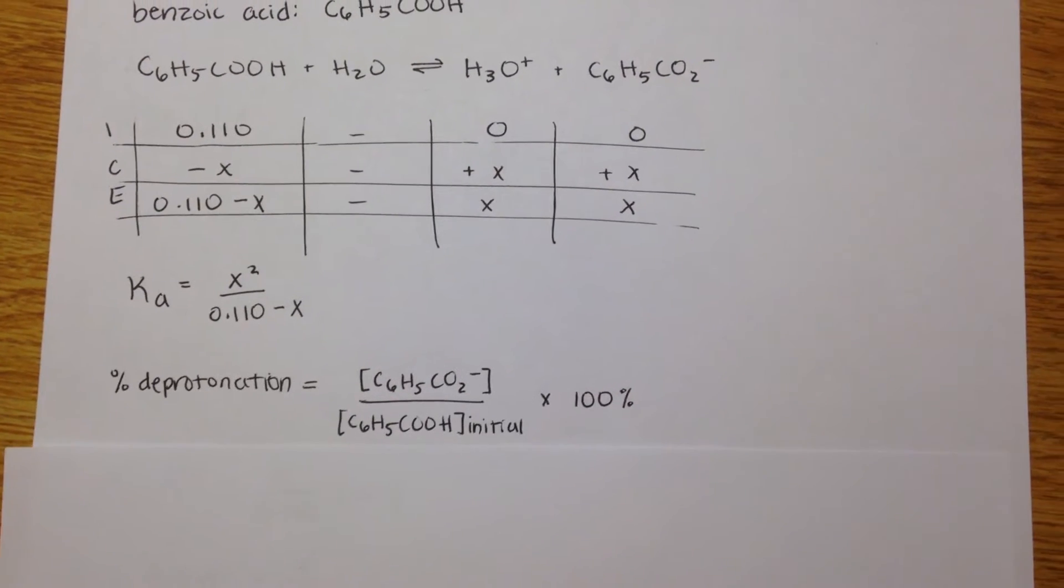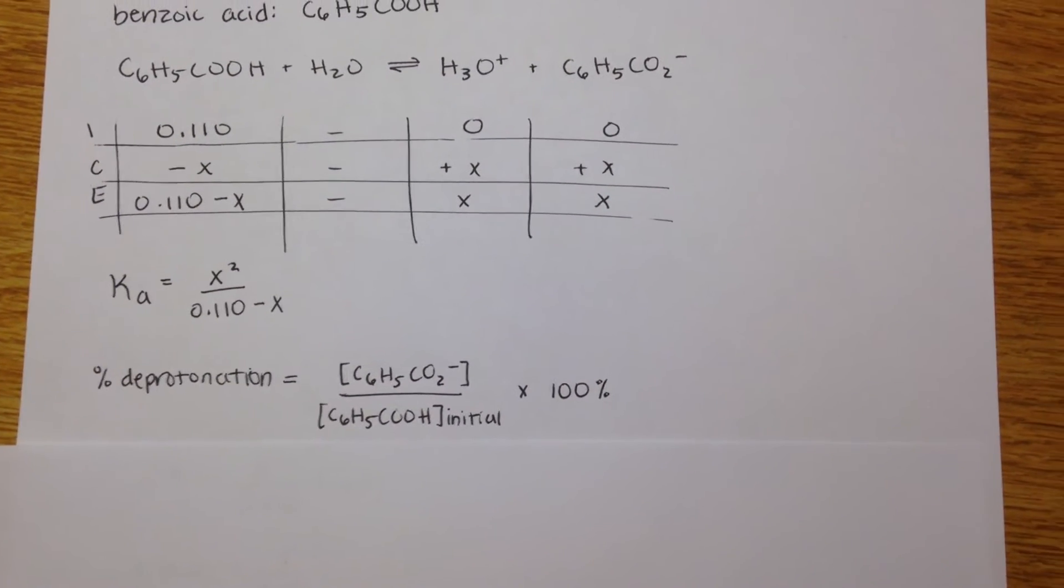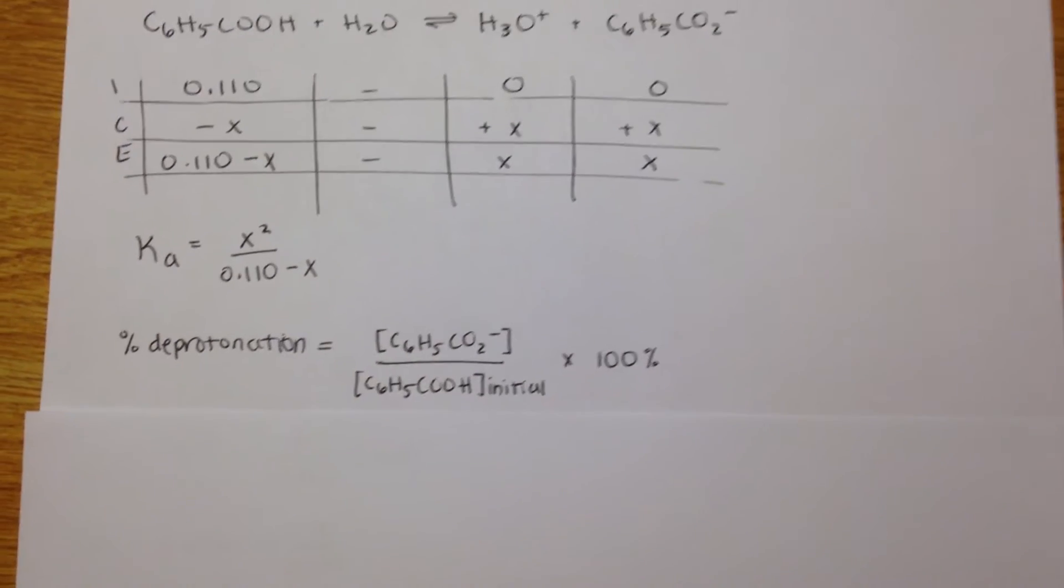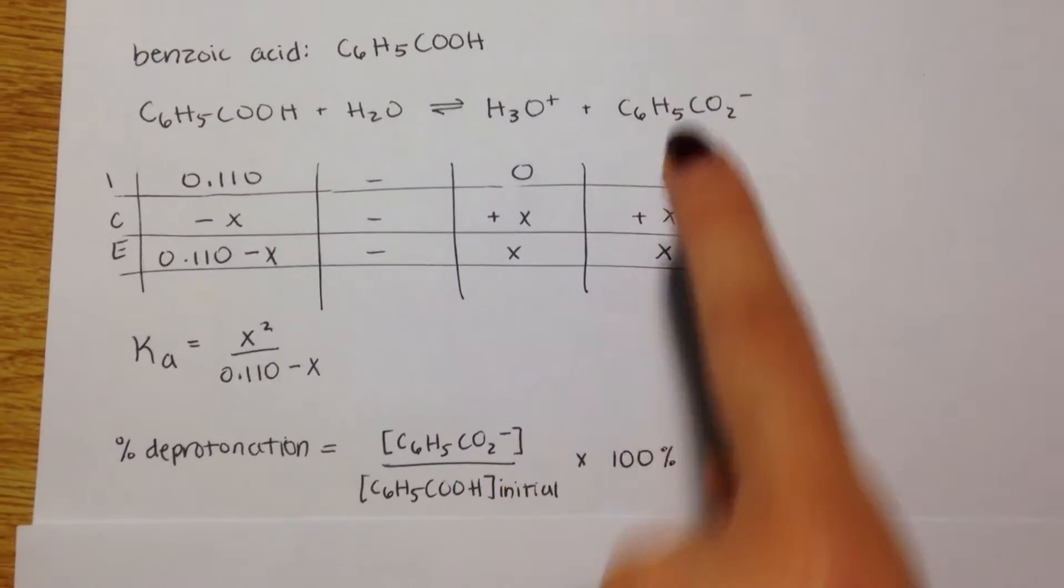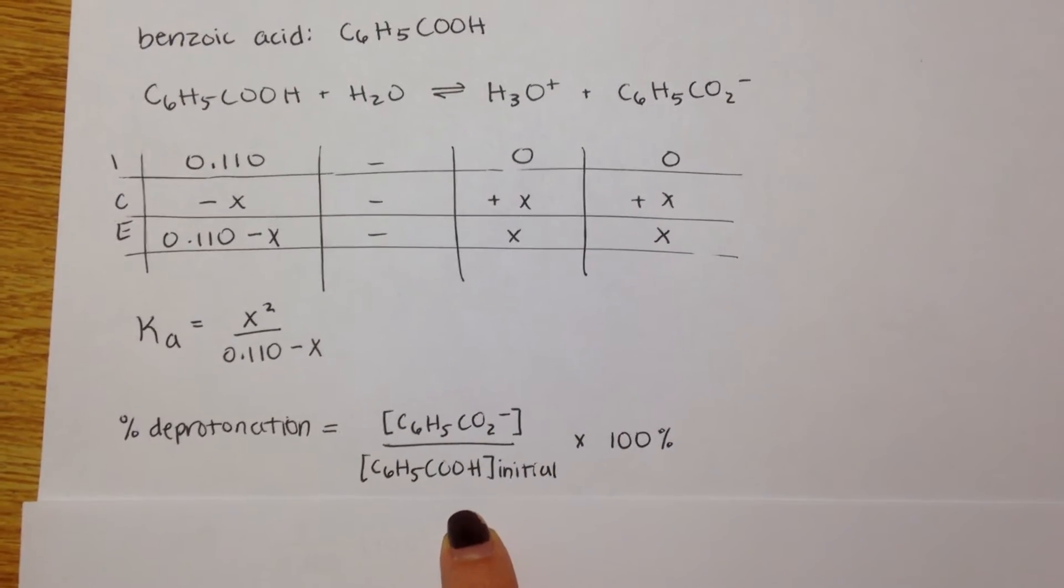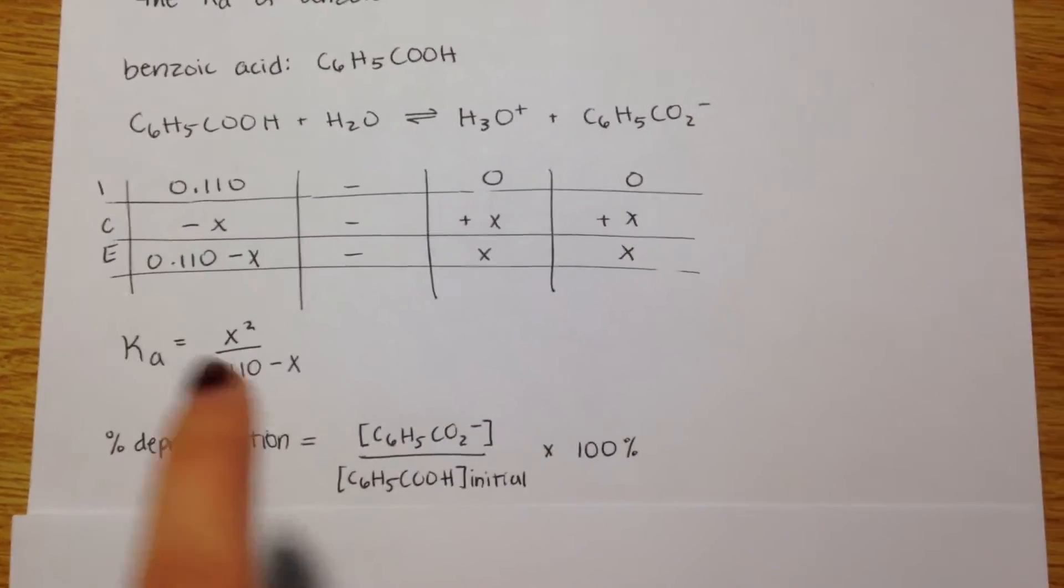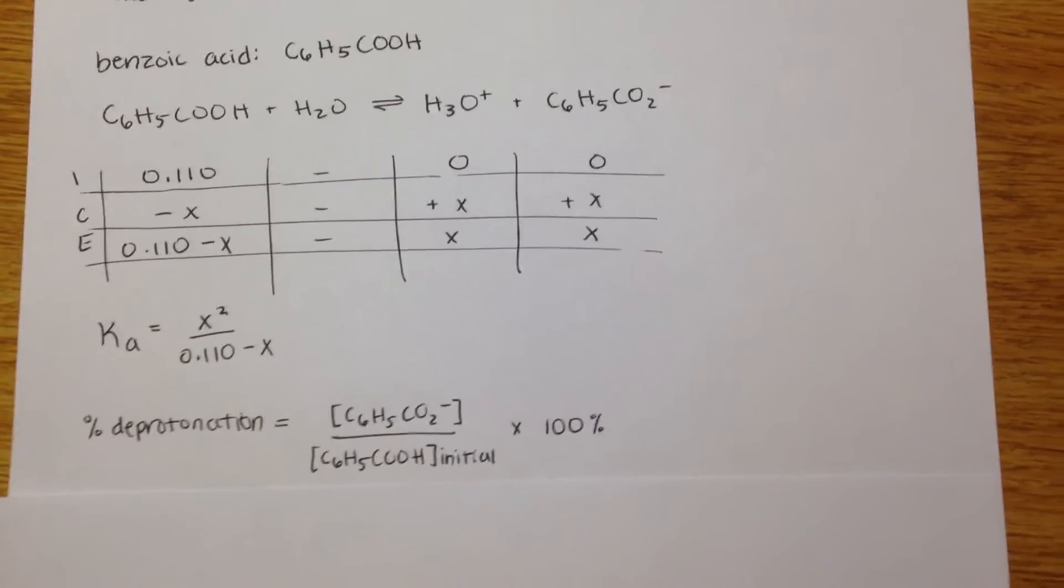and percent deprotonation or percent ionization is the concentration of the conjugate base over the concentration of the initial benzoic acid times 100%.